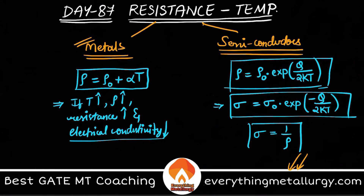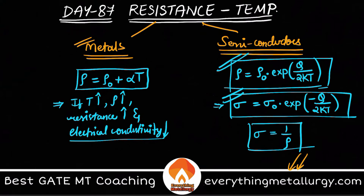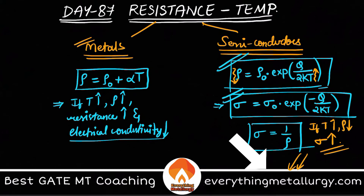These formulae tell us that if you increase the temperature in semiconductors, resistivity decreases. So if T is increased, ρ decreases and therefore σ increases. This is the key difference: in pure metals, increasing temperature causes electrical conductivity to come down because resistance increases; whereas in semiconductors, increasing temperature causes resistivity to decrease and conductivity to increase.